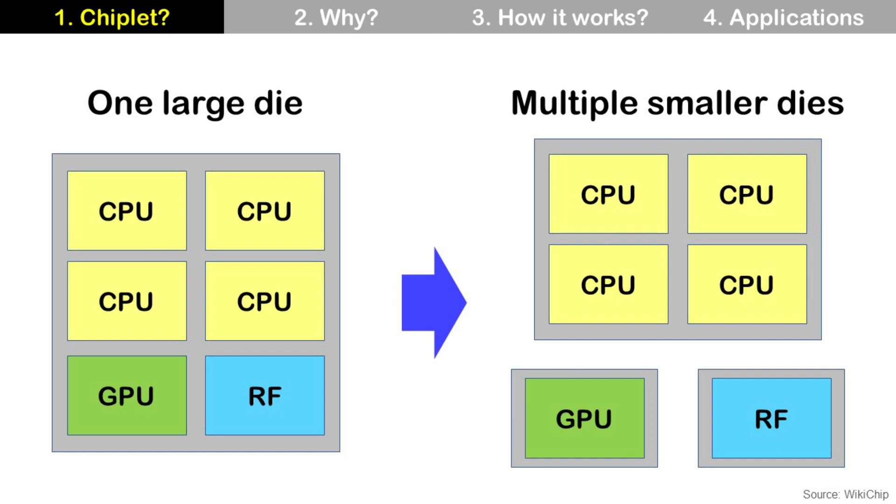Imagine we have one large die and it has CPU, GPU, and RF functional blocks all in one die as SOC, system on chip. But it is very expensive and there are many challenges to make this large die. Fortunately, we can have all these functions by multiple smaller dies and economically, it is more reasonable. But we need to add interface block to each die, so total die area will be more than one large die. That is a brief concept of Chiplet.